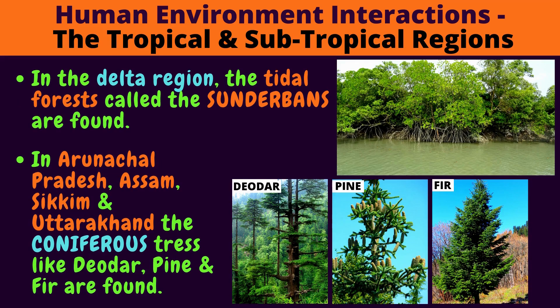In the delta region, the tidal forests called the Sundarbans are found. Can you see the Sundarbans in the picture? In Arunachal Pradesh, Assam, Sikkim and Uttarakhand, coniferous trees like deodar, pine and fir are found. Can you see the coniferous trees in the pictures — a picture of the deodar tree, pine tree, fir tree?